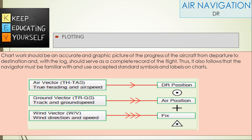Chart work should be an accurate and graphic picture of the progress of the aircraft from departure to destination, and with the log should serve as a complete record of the flight. Thus, it also follows that the navigator must be familiar with and use accepted standard symbols and labels on charts.